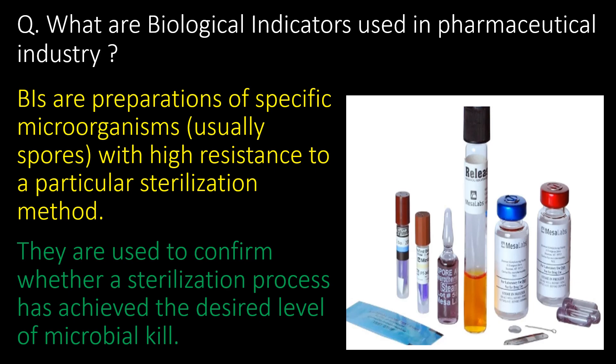Welcome. We will start with some basic questions and then go in detail. First question: what are biological indicators used in pharmaceutical industry? Biological indicators are preparations of specific microorganisms, usually spores, with high resistance to a particular sterilization method. They are used to confirm whether a sterilization process has achieved the desired level of microbial kill.